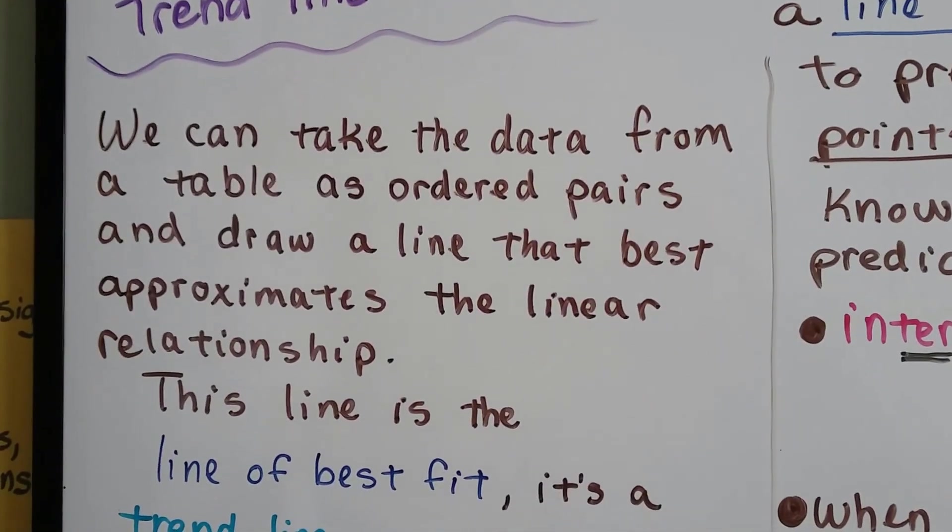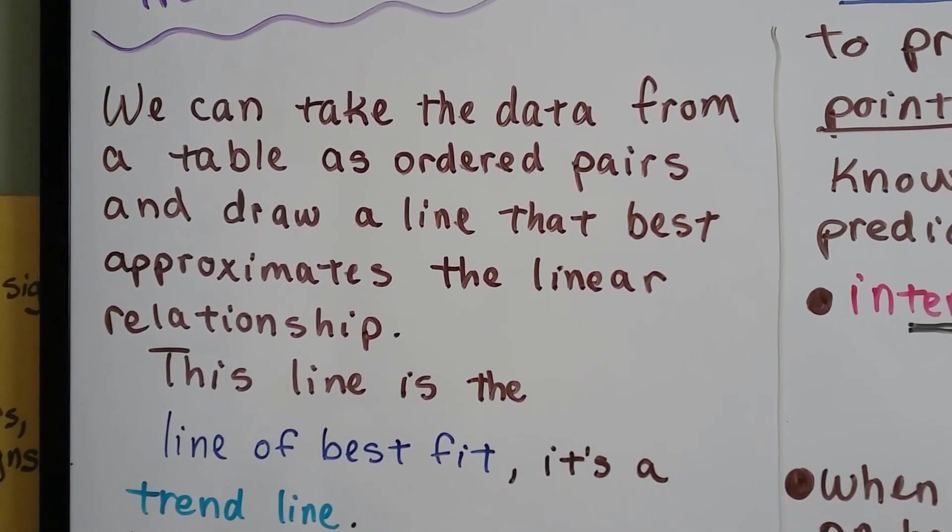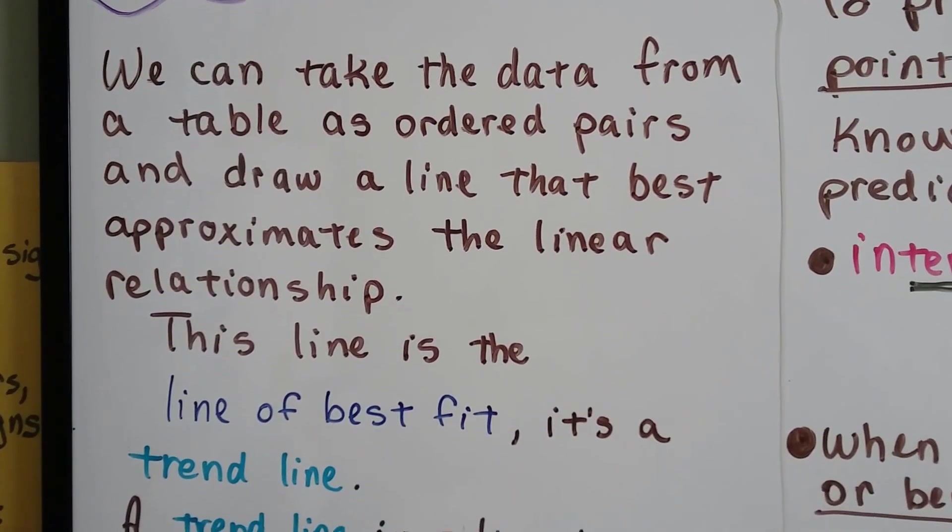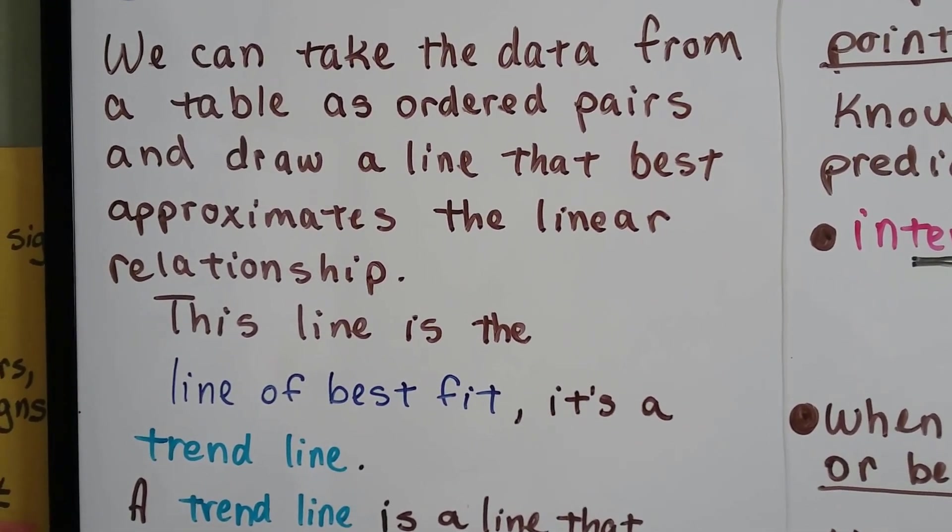We can take the data from a table as ordered pairs, like a function table. We can draw a line that best approximates the linear relationship. And this line is the line of best fit. It's a trend line.